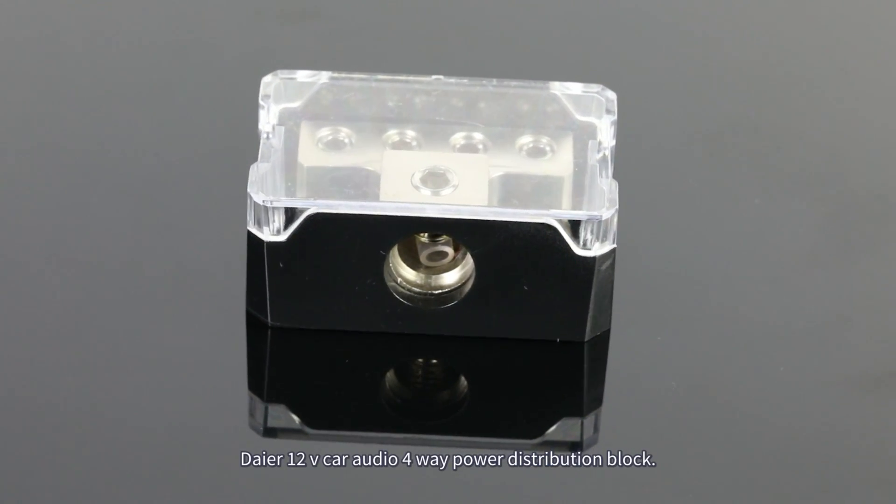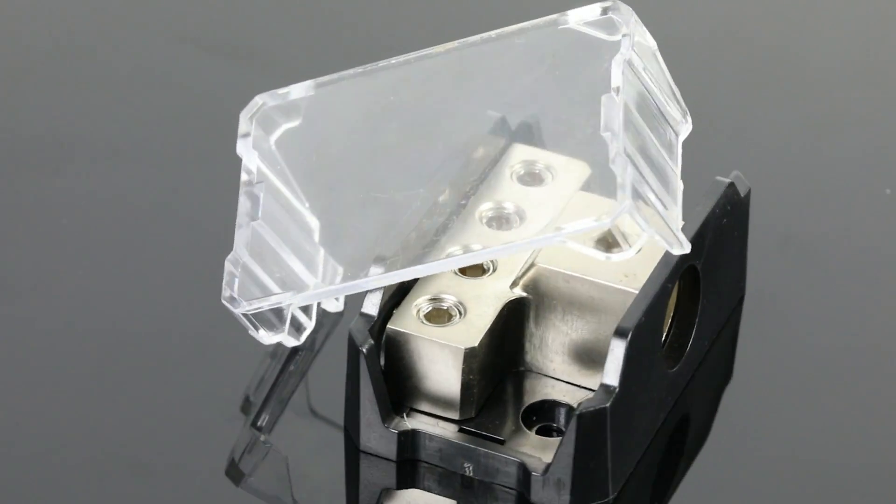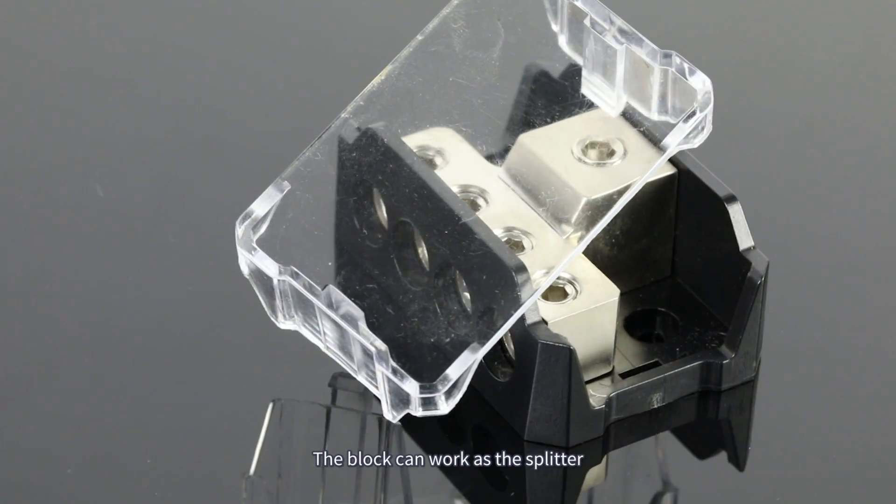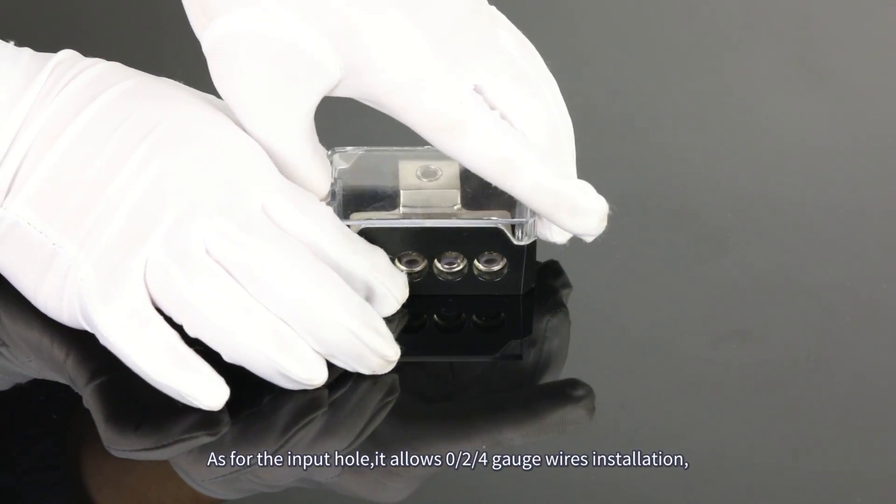The Dyer 12-volt car audio 4-way power distribution block can work as a splitter and integration for both positive and ground use. As for the input hole, it allows 0, 2, and 4 gauge wires installation.